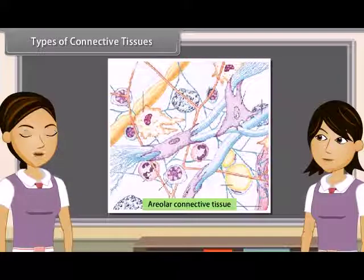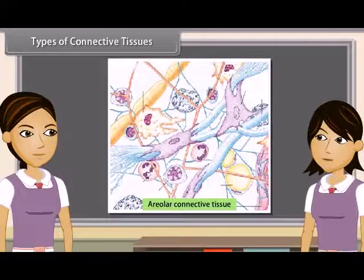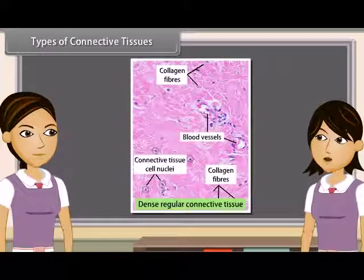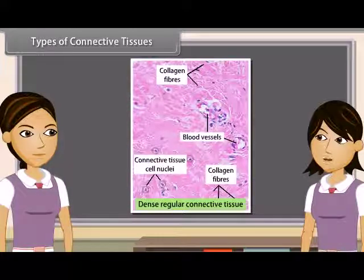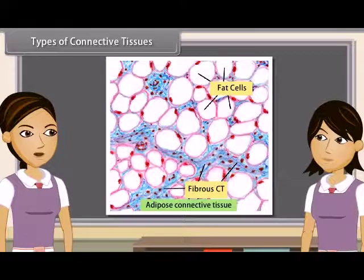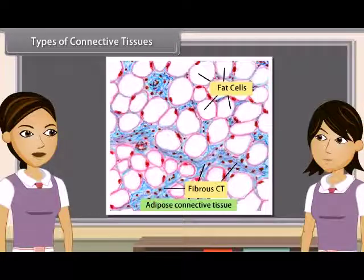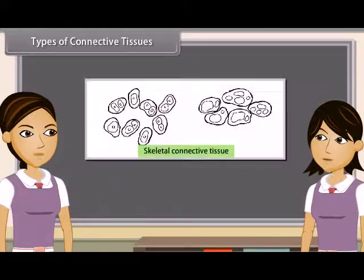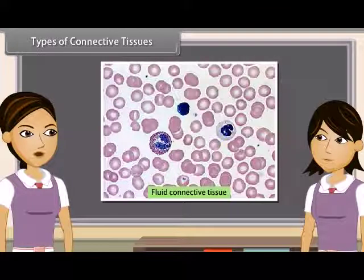Areolar connective tissue is a loose and cellular connective tissue; its matrix contains white and yellow collagen fibers. Dense regular connective tissue has orderly and densely packed fibers and cells, and is a main component of tendons and ligaments. Adipose connective tissue is an aggregation of fat cells, also known as adipocytes, which are oval or round and filled with a large droplet of fat. Skeletal connective tissue contains cartilage and bone, forming the endoskeleton of the vertebrate body. Fluid connective tissue links different parts of the body and includes blood and lymph.